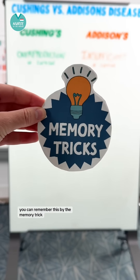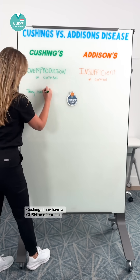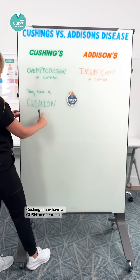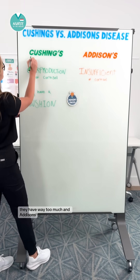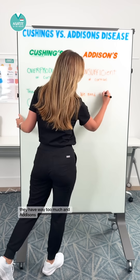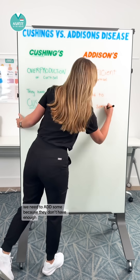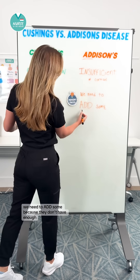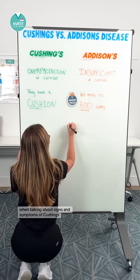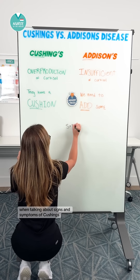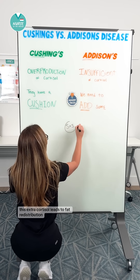You can remember this by the memory trick: Cushing's — they have a cushion of cortisol, they have way too much. And Addison's — we need to add some because they don't have enough.